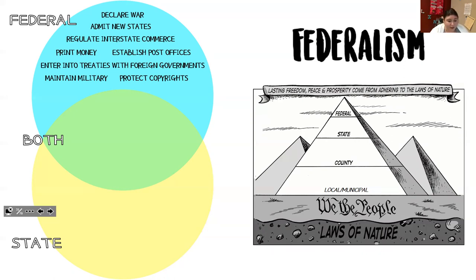Territories have to apply for statehood. Not too long ago, there was an opportunity for us to take Puerto Rico on as a state — Puerto Rico really is just a territory for us. We got to vote using our legislation and government branches to decide whether Puerto Rico should come in, and it was determined by Puerto Rico. We could have been 51 states. The federal government can also admit new states, regulate commerce, and print money — Texas doesn't have its own money, there is just American money.